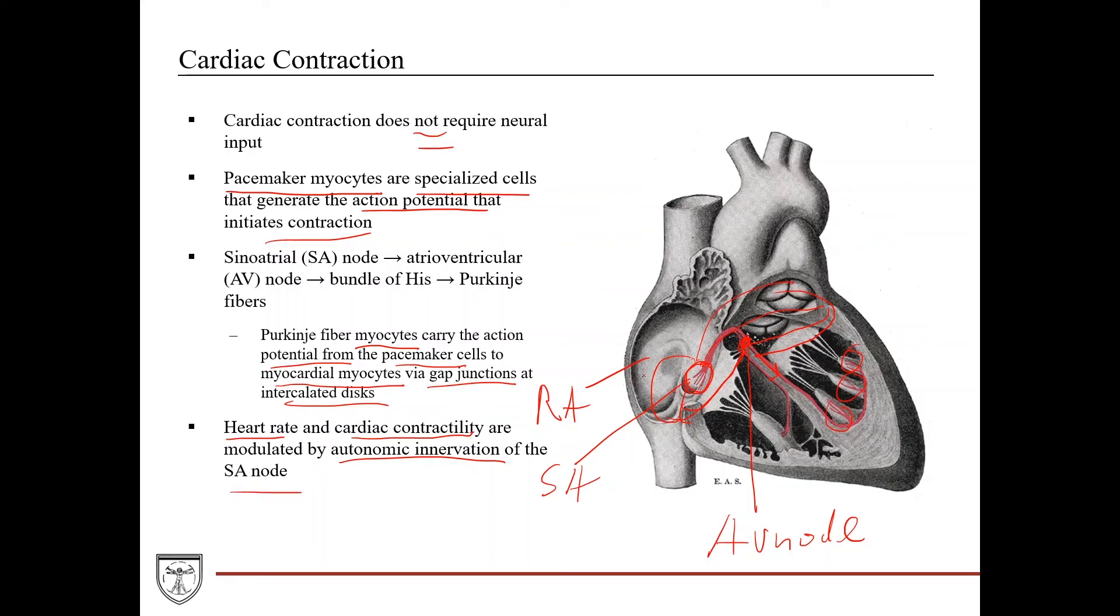So the autonomic nervous system, let's say you're startled or you want to run away from something, you want to increase your heart rate, the autonomic nervous system will, in response to that, the flight or fight response, will cause an increase in your heart rate by stimulating the SA node.